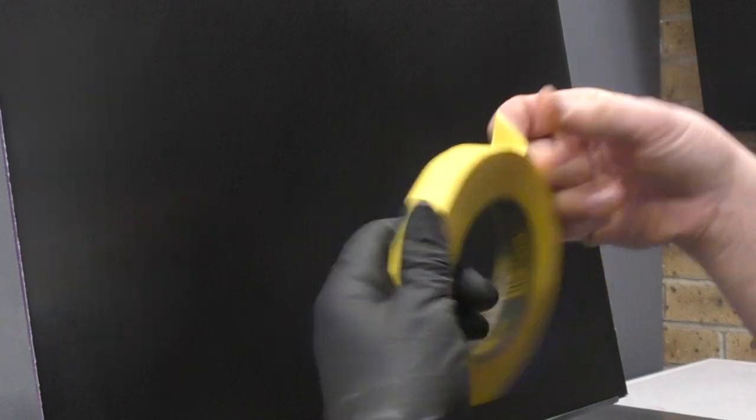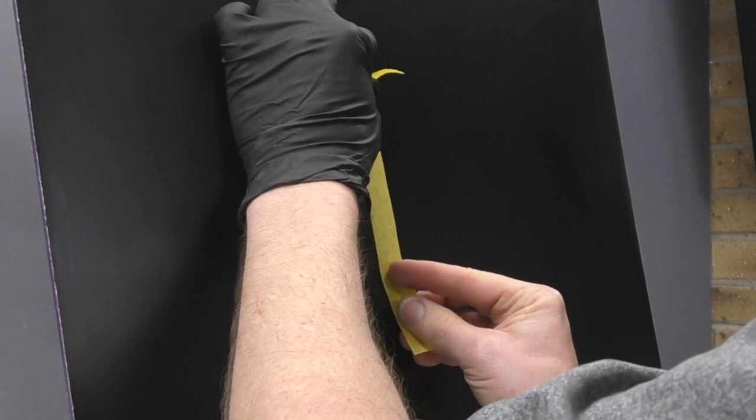Starting off with some masking tape, I'm going to grab a couple of strips. The panel that I'm using is an aluminum composite panel. It's already been prepped with some gray Scotch-Brite just to provide some tooth for the paint to stick to.